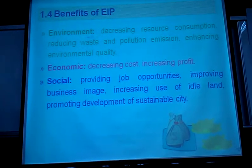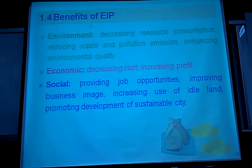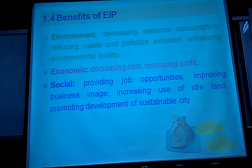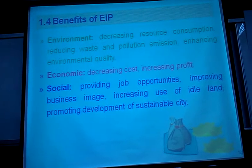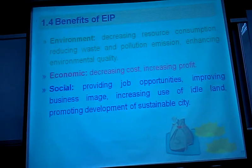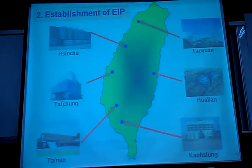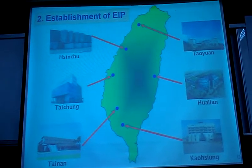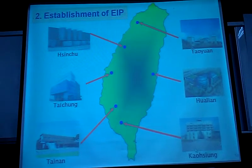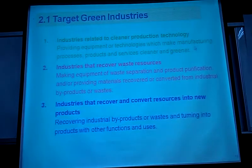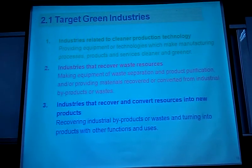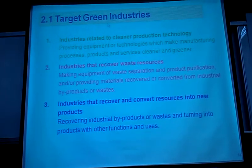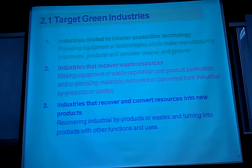We can see many benefits obtainable through EIP development in different countries — from environmental, economic, and social aspects. Currently in Taiwan, six EIPs have been fully developed by the EPA and MOE. We need to identify the target green industries recommended to move into the Eco Industrial Park: cleaner production technologies, industries that can recover waste as resources, and technologies that convert waste into resources.